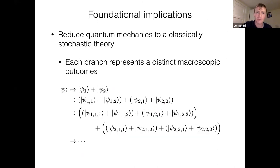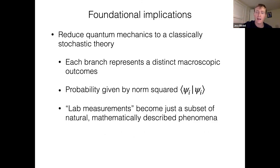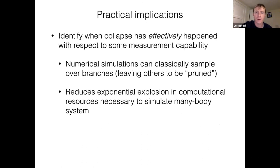You don't have to keep this exponentially proliferating number of branches — you just pick them randomly according to the Born rule. A correlator for the entire state can be estimated by looking at just the correlator evaluated on a small number of branches. You don't have to simulate them all. You identify them as they are generated by the dynamics, and then you just sample from a small subset of them.